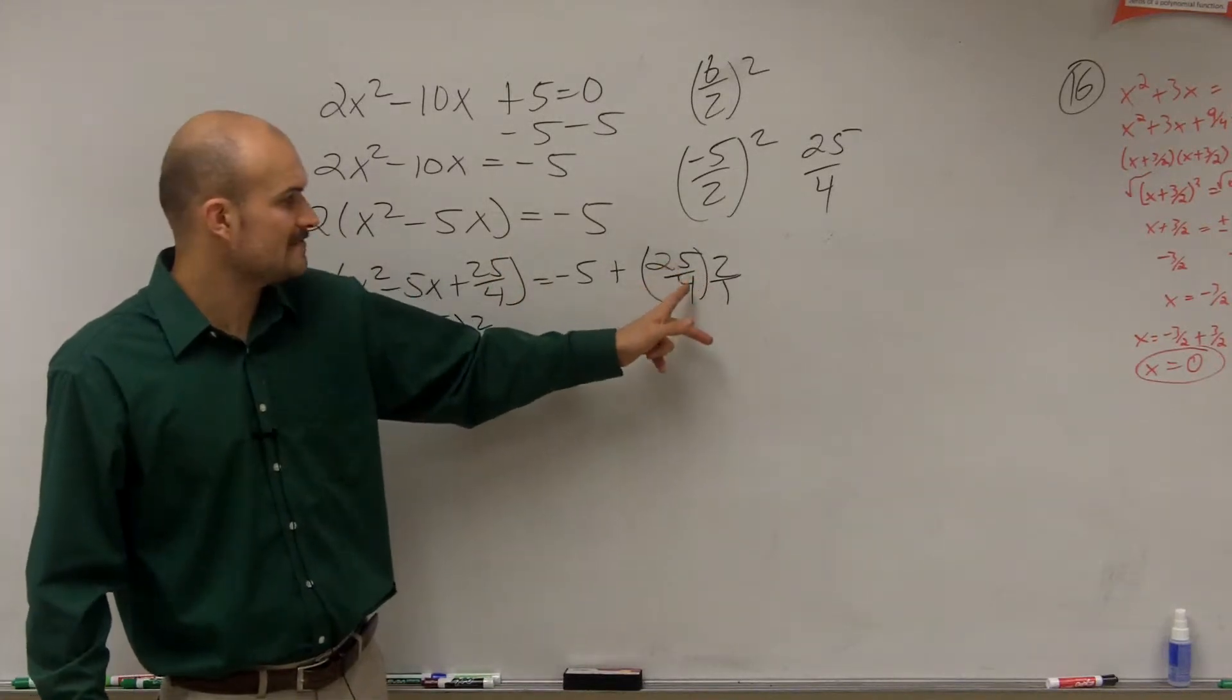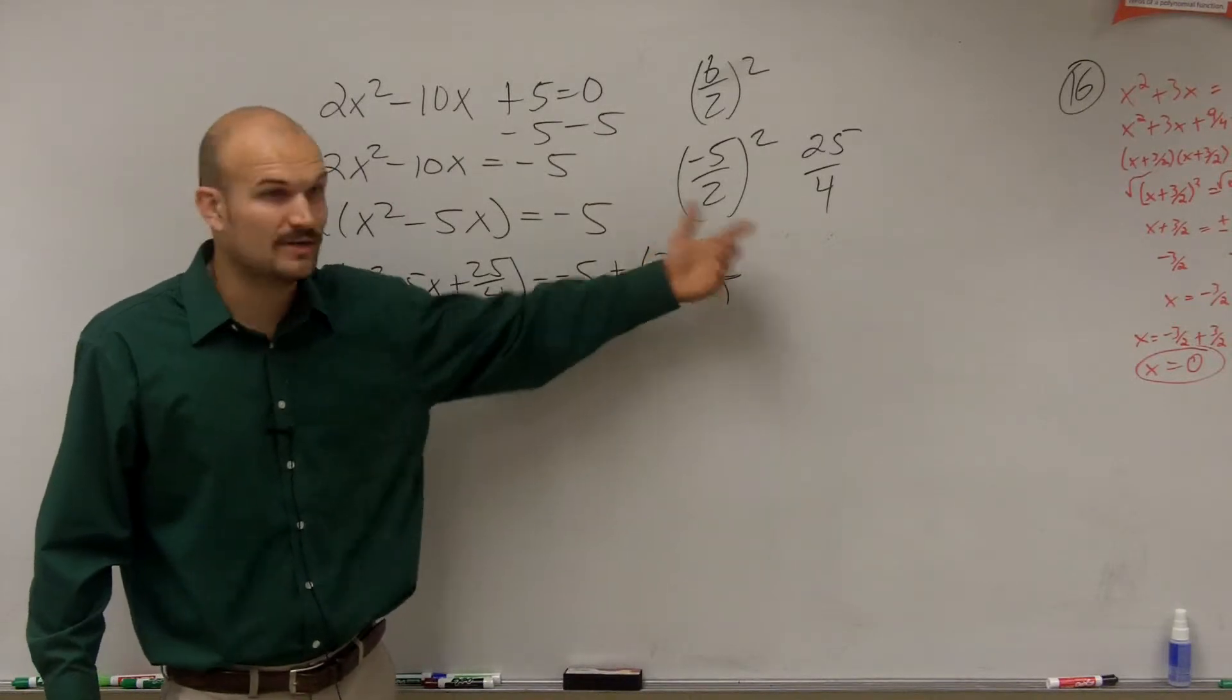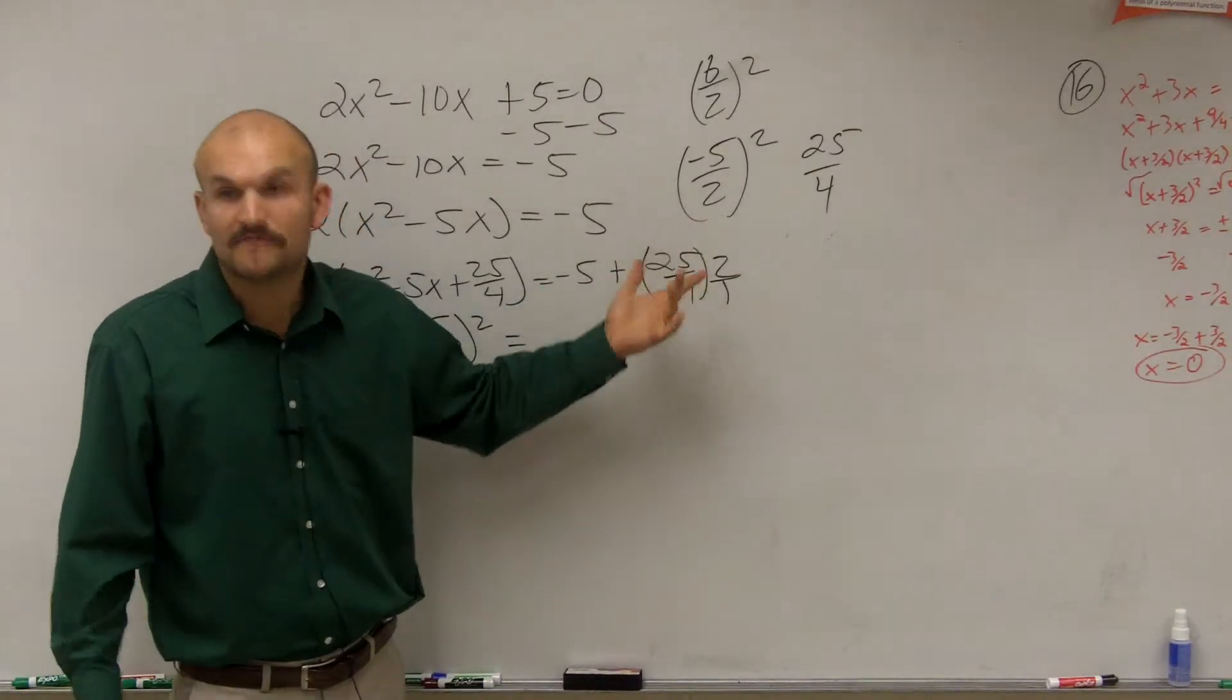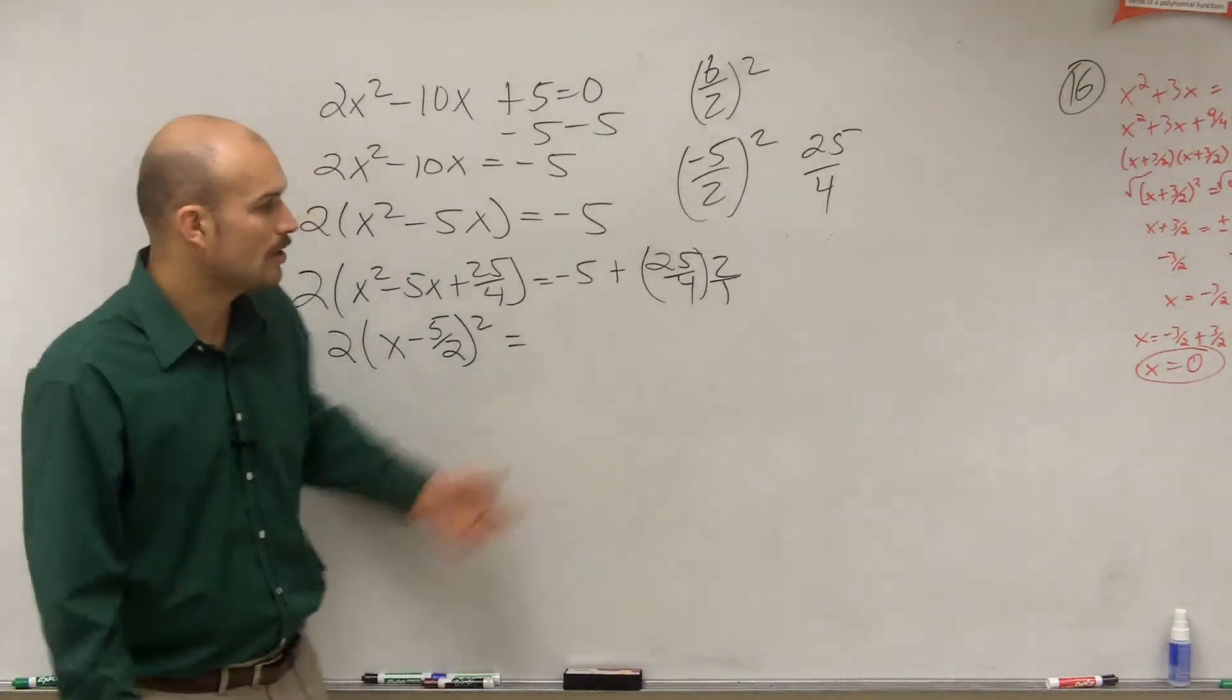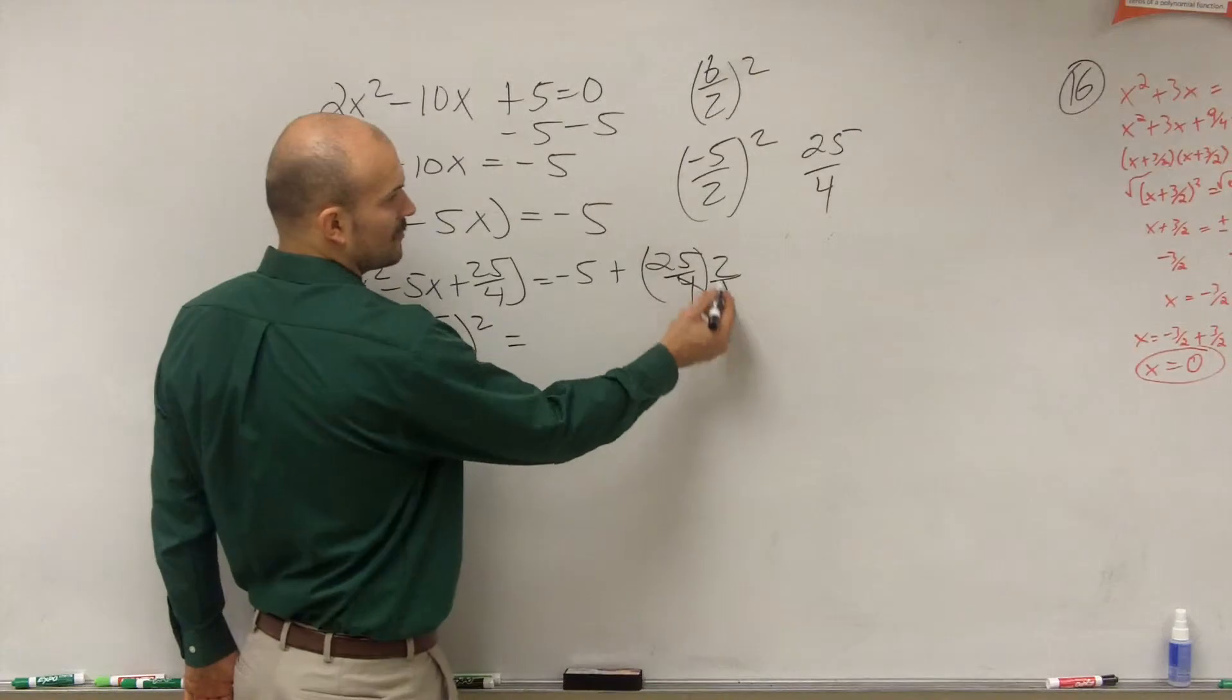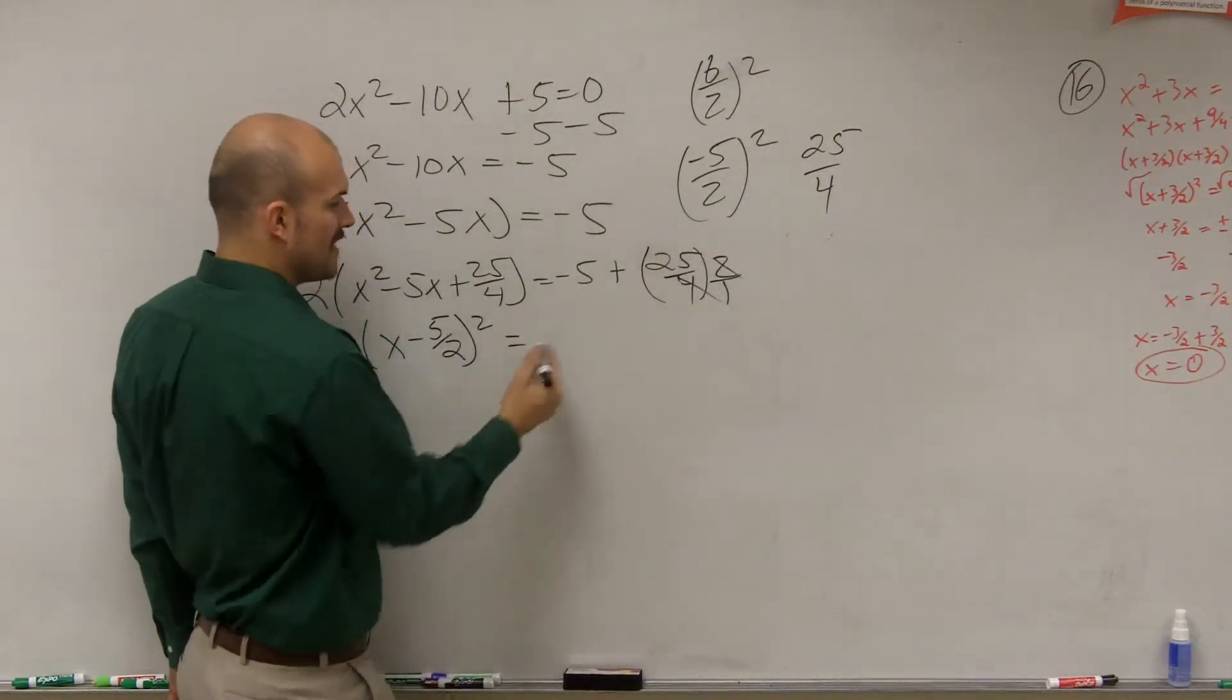So first of all, 25 divided by 4 multiplied by 2 over 1. You can just multiply across, which would give you 50 divided by 4, which you guys can simplify, or you guys can also just say, well, if I divide the top and the bottom by 2, what I'm left with is 25 over 2.